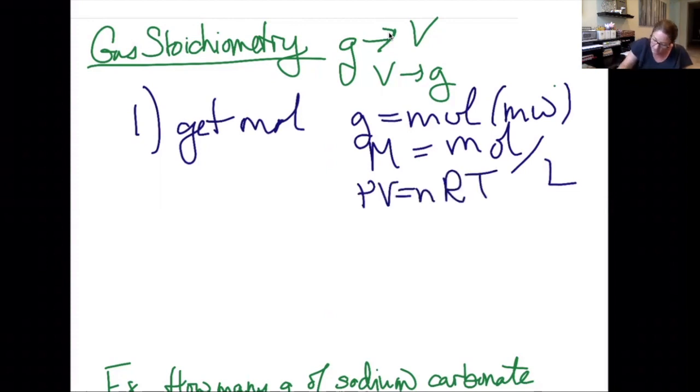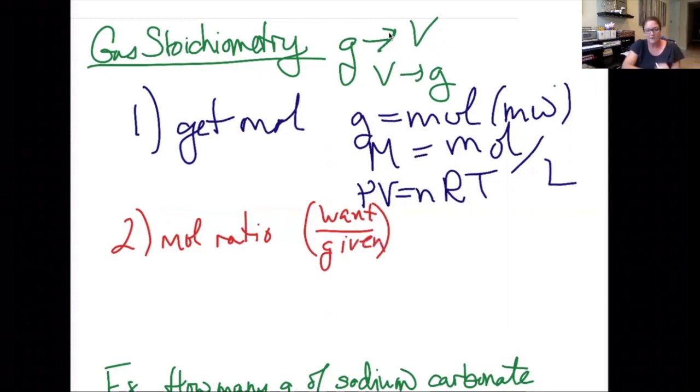The second thing we're going to do is we're going to do the mole ratio, and the mole ratio is where we multiply by want over given. The third thing that we're going to do is we're going to get the answer.